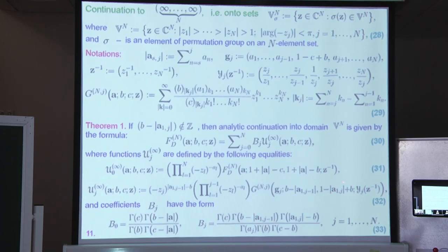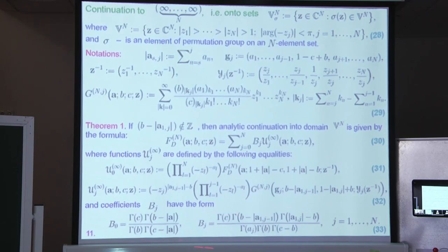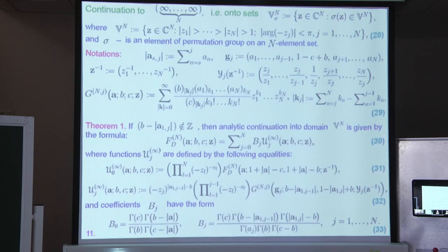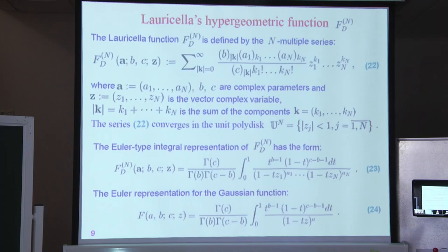The other n functions are expressed in terms of the series G, which differs from the initial Lauricella series but also belongs to the Horn class of hypergeometric series. Coefficients in representation 13 are expressed in terms of gamma functions, as simply as for the Gaussian hypergeometric function. If the complex vector z lies far enough from the boundary of the domain v, such a representation provides an apparatus for effective computation of the Lauricella function in the domain v and hence an effective method for computing such Euler-type integrals.